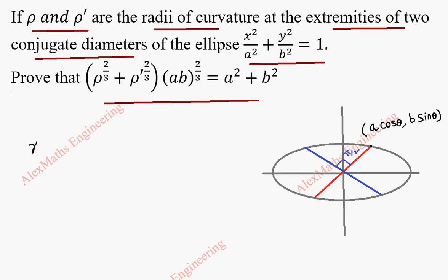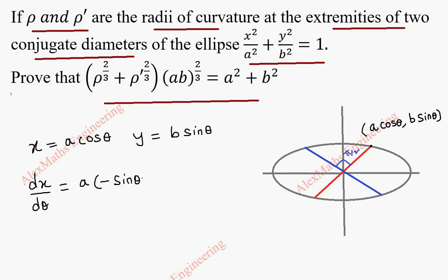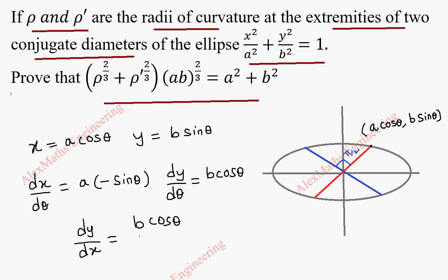First, let's take the parametric form: x equals a cos theta and y equals b sin theta. From this, dx by d theta will be a times minus sin theta, and dy by d theta will be b times cos theta. So dy by dx equals b cos theta divided by minus a sin theta, which is minus b by a times cot theta.